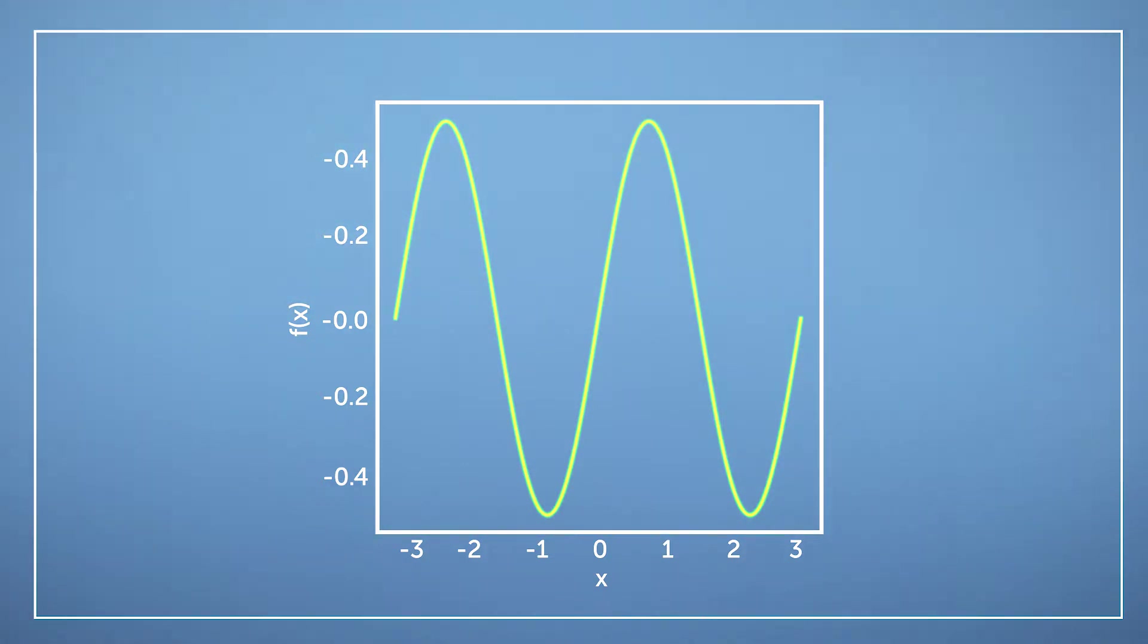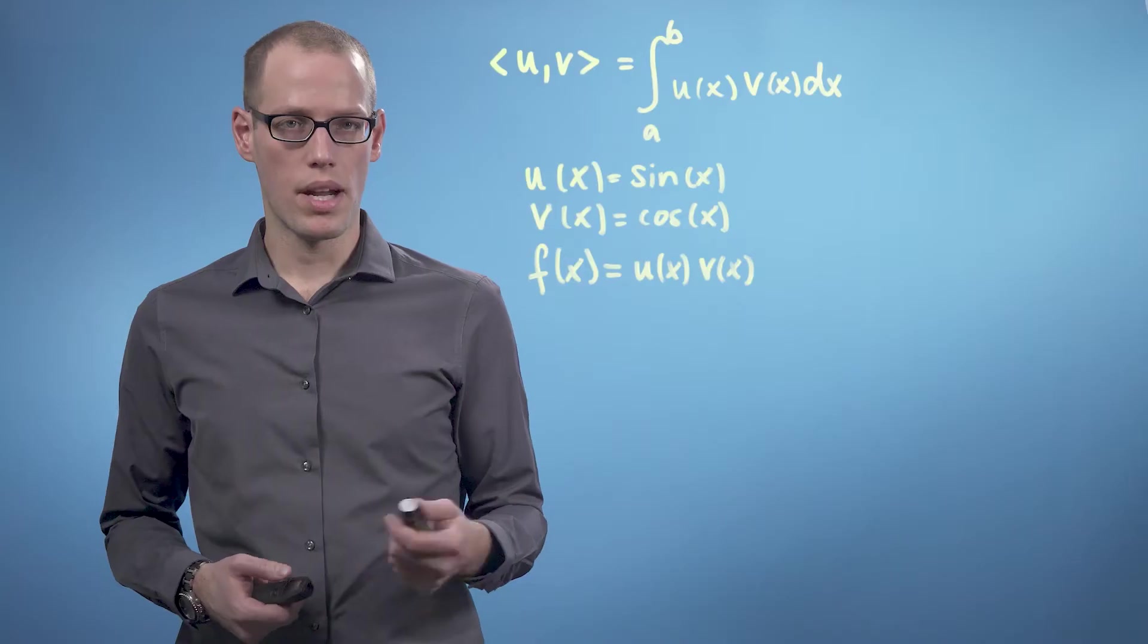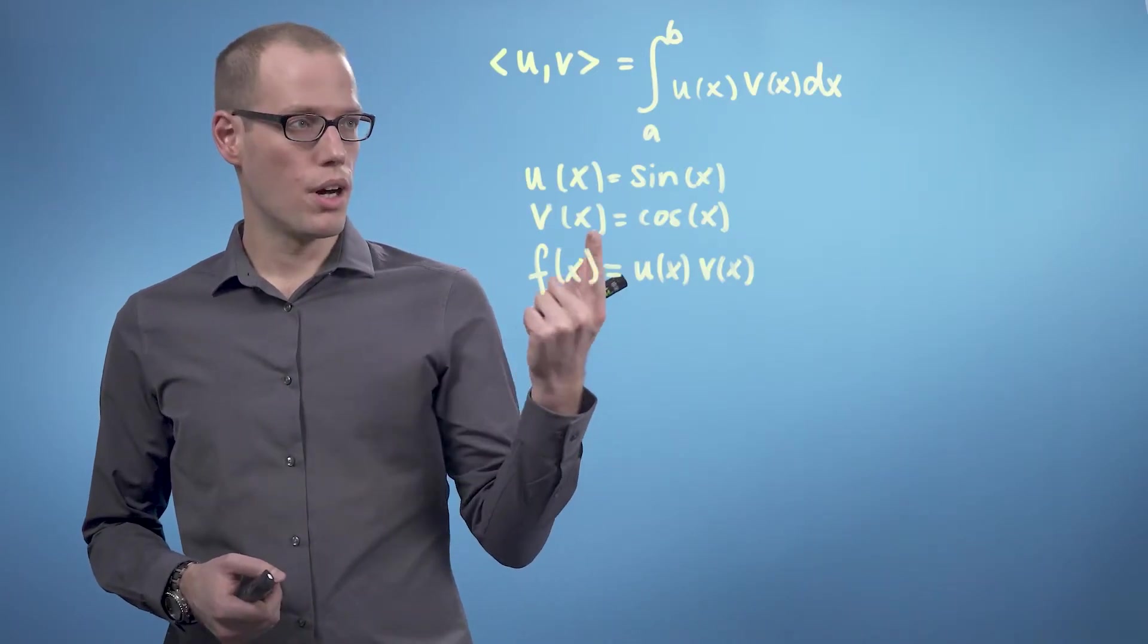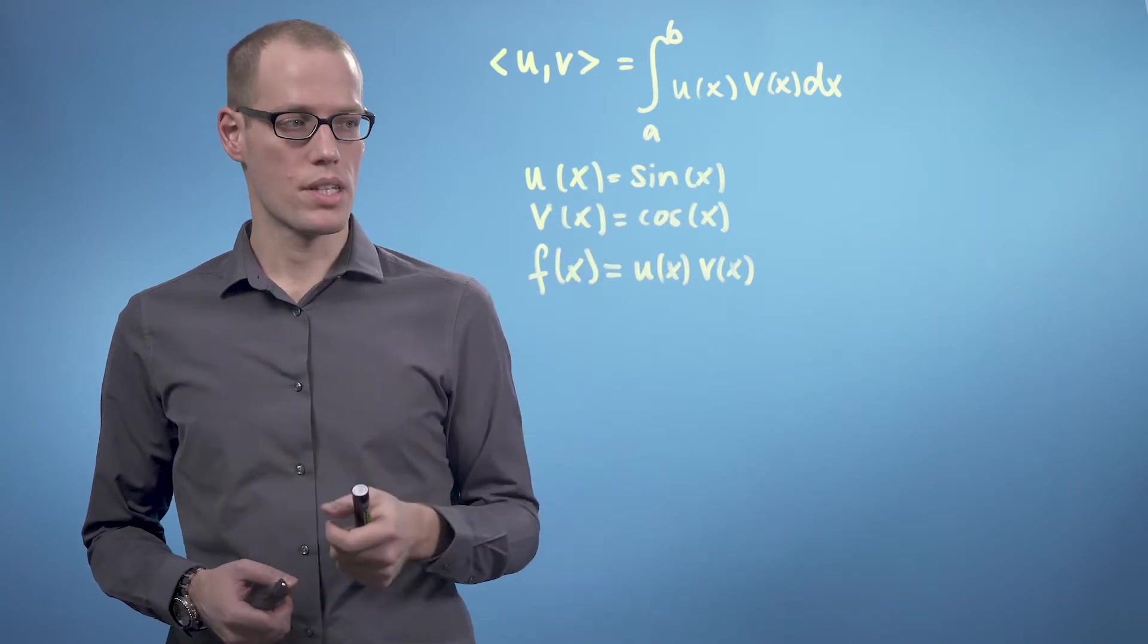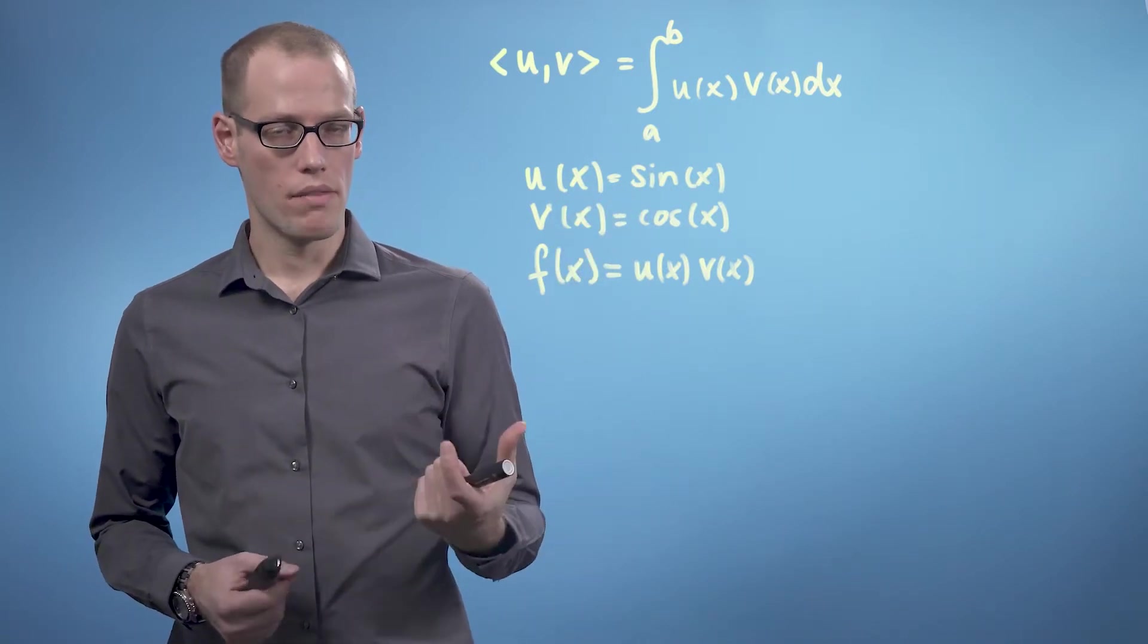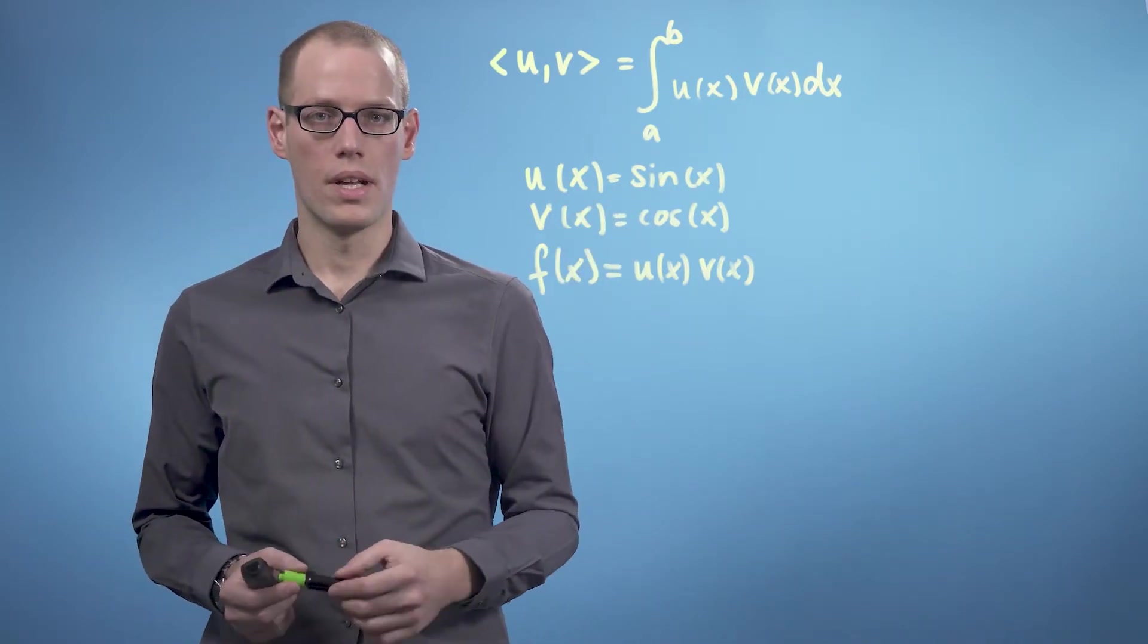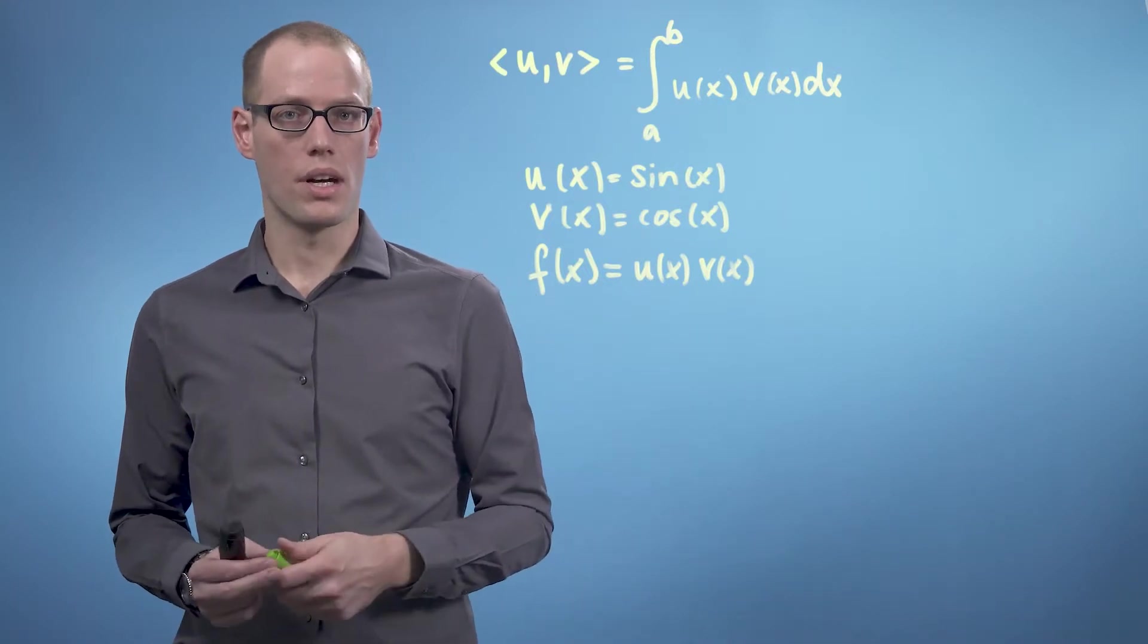We see that this function is odd, which means that f(-x) equals -f(x). If we choose the integral limit to be -π and +π, then the integral of this product sine x times cosine x evaluates to zero. And that means that sine and cosine are orthogonal.